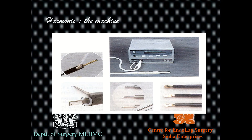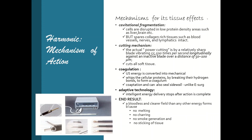This is the Harmonic machine — the generator, the piezoelectric crystal, the handpiece, and the attachments through which energy is delivered to tissue. The first mechanism of tissue effect is cavitational fragmentation: cells are disrupted in low protein density areas such as liver and brain, but it spares collagenous tissue like blood vessels, nerves, and lymphatics, making it a much less bloody kind of dissection.